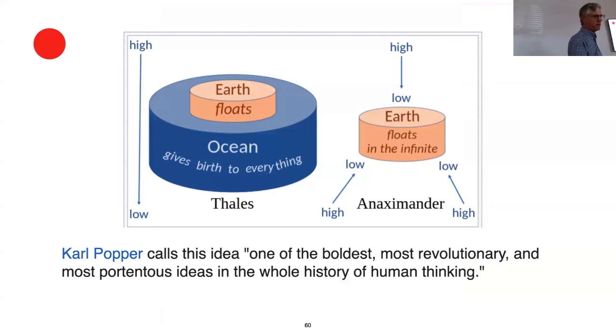He also had the idea that the Earth is a cylinder, flat cylinder that floats in the infinite, in infinite space. Karl Popper calls Anaximander's idea of Earth floating in the infinite one of the boldest, most revolutionary, and most portentous ideas in the whole history of human thinking. We can appreciate Anaximander's originality by comparing his theory with that of his teacher, Thales. Thales thought the Earth floated in a giant ocean, and that there was only one up and one down. For Thales, things fell in one direction only, from high to low. Anaximander thought that whenever you go in any direction away from Earth, you are going up or higher, and that the Earth was therefore the center of the universe.